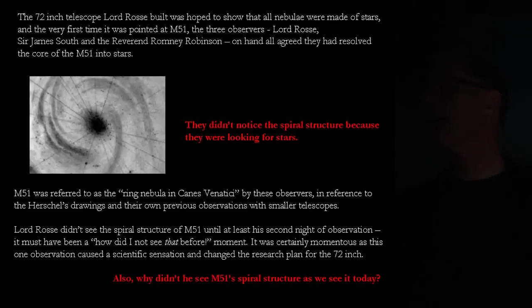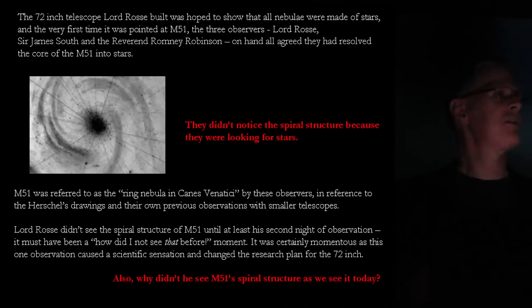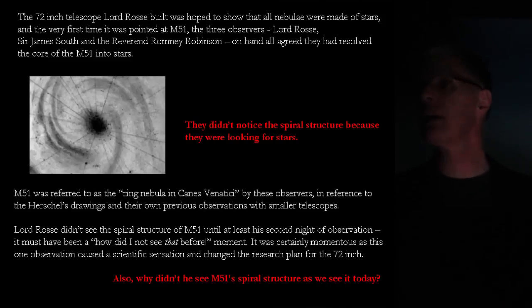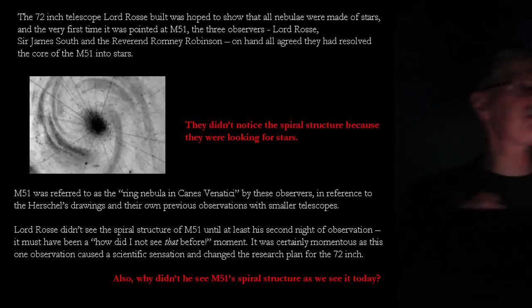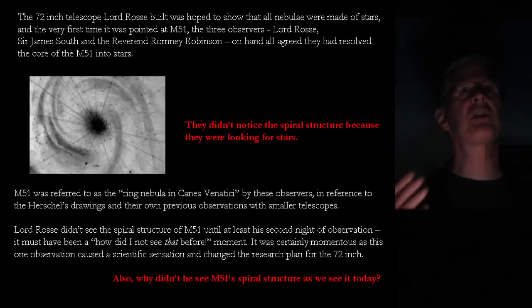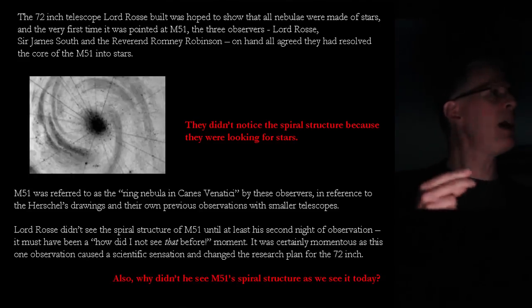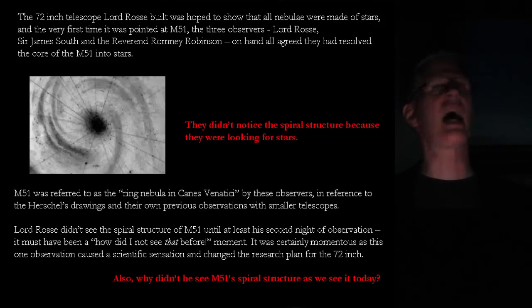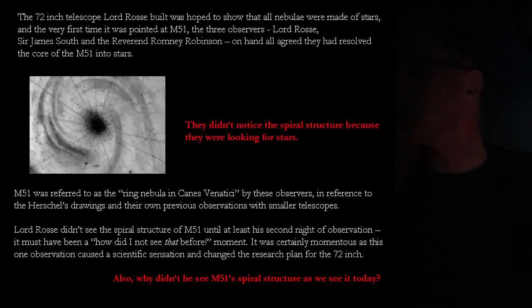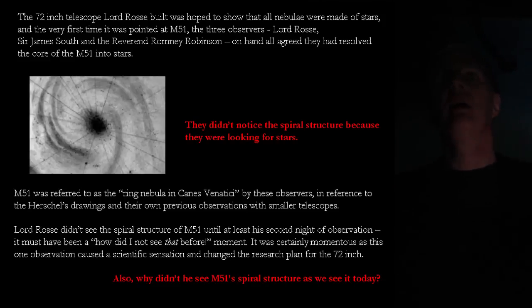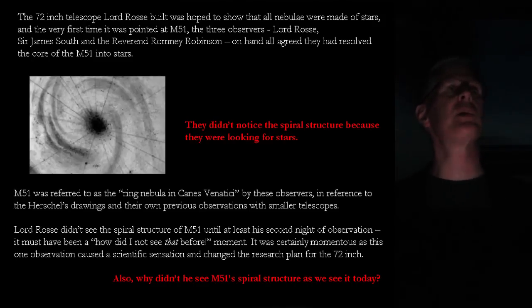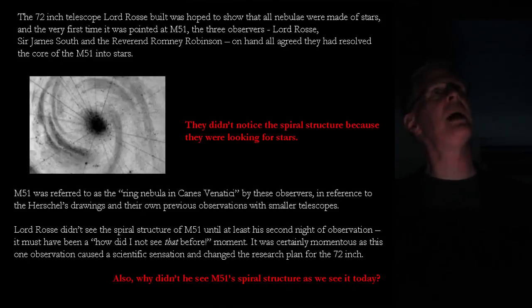It wasn't until at least the second night of observation on the 72-inch that Lord Ross saw the spiral structure — it must have knocked him on his butt. I've had the opportunity to look at M51 through a 90-inch telescope at Kitt Peak, and obviously that's a bigger, more modern telescope with much brighter images — but the spiral structure jumps out and slaps you in the face. Yet on that first night with the 72-inch, they weren't looking for it, so they missed it entirely.